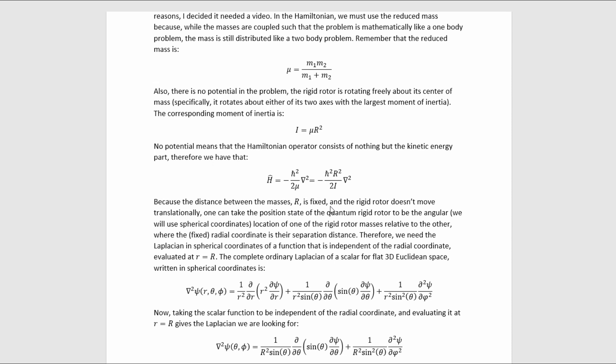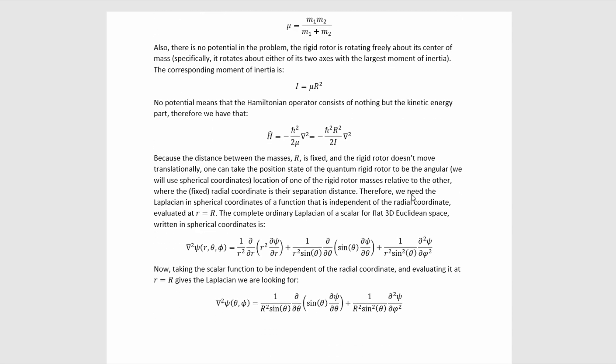Because the distance between the masses, this r quantity, is fixed and the rigid rotor doesn't move translationally, one can take the position state of the quantum rigid rotor to be the angular location of the rigid rotor masses relative to each other, where the fixed radial coordinate is their separation distance. We will use spherical coordinates. I'm telling you we're going to use spherical coordinates to tell you exactly what convention for the angular location we're going to be using. Therefore, we need the Laplacian in spherical coordinates of a function that is independent of the radial coordinate evaluated at that radial coordinate equals the separation distance of the rigid rotor.